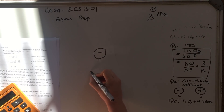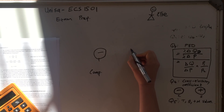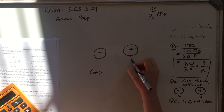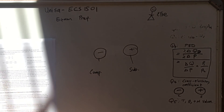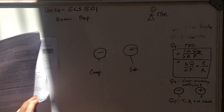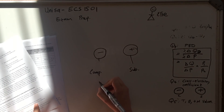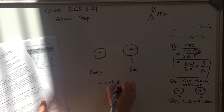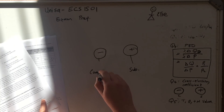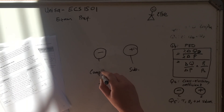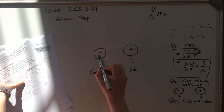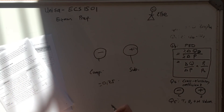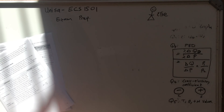Cross elasticity of demand: what you need to know is that if your answer is negative, the products are complements, and if the cross elasticity coefficient is positive, the products are substitutes. For example, if the cross elasticity of demand of products A and B is minus 0.25, then you say it's negative so products A and B are complements, because the cross elasticity coefficient is negative.